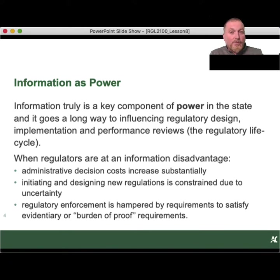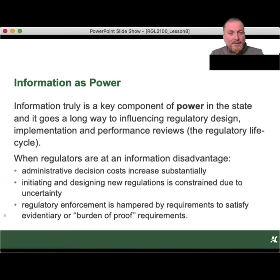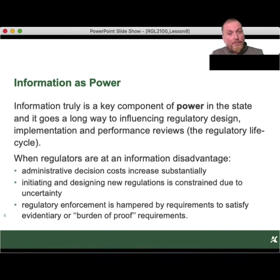Initiating and designing new regulations is constrained due to uncertainty. Regulators can be put in a position of great uncertainty as to how to react on a problem, even if they have strong inclinations about the factors of harm — they're not 100 percent sure because their information is not comprehensive. Most governments will be largely risk averse in those situations, which can have a negative downward pressure on public goods. The tendency is to not act yet. Regulatory enforcement is also hampered by requirements to satisfy evidentiary or burden-of-proof requirements, and there's sometimes a reluctance to go to full enforcement because regulators are not confident in the information available.